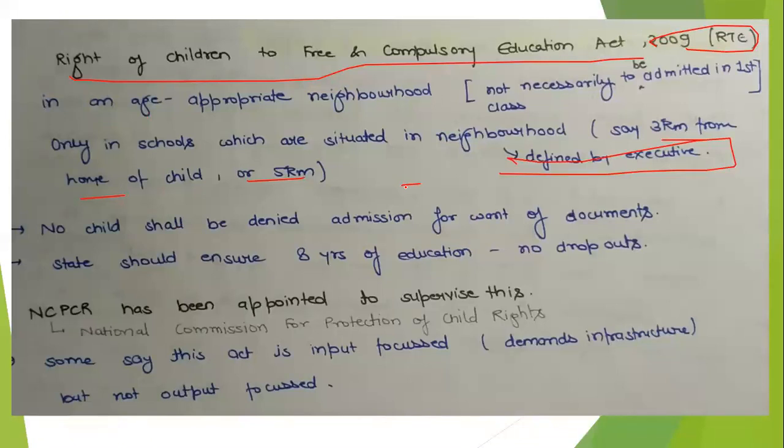The third point was that the state is not only responsible for achieving universal enrollment of children in the age group of 6 to 14 years, but also to ensure that these children complete 8 years of primary education and do not drop out. This was the main focus.